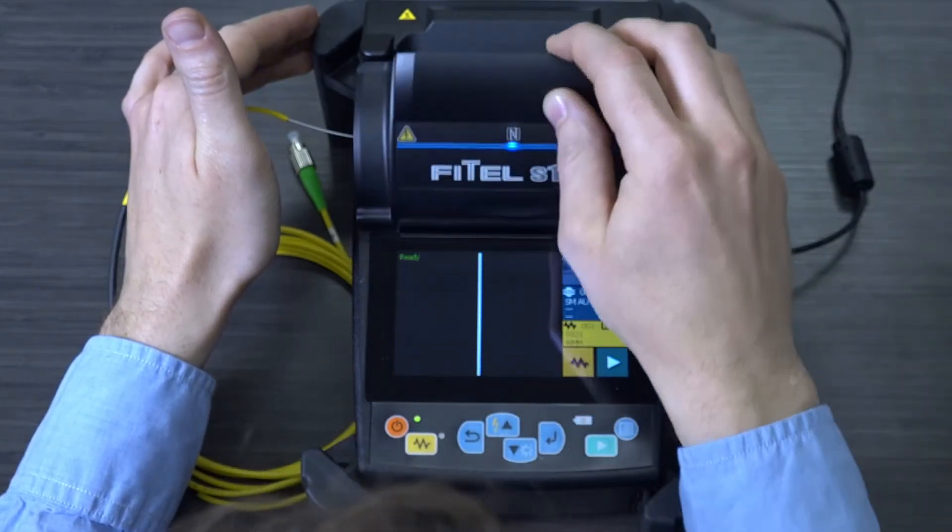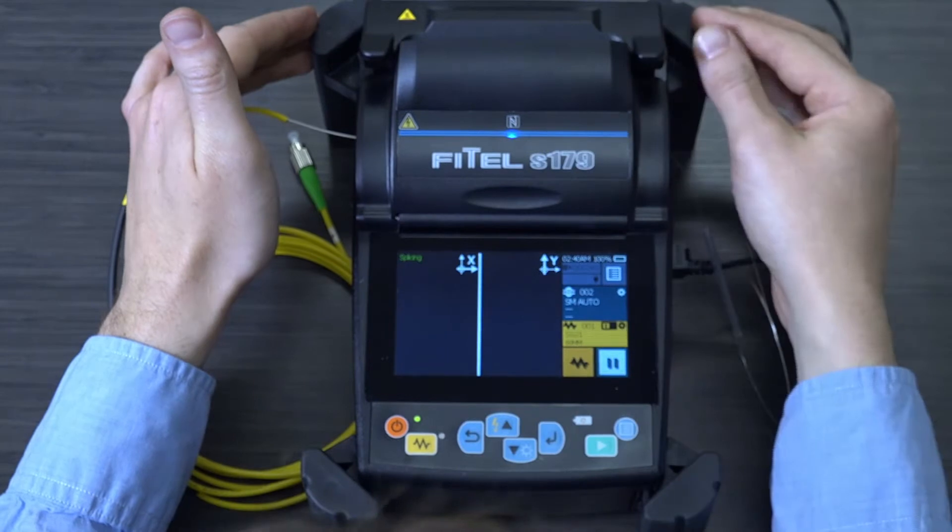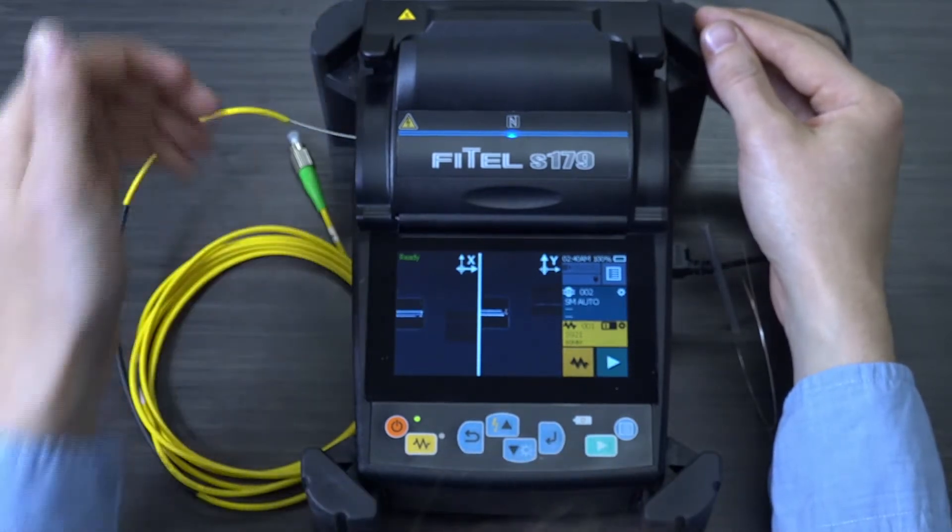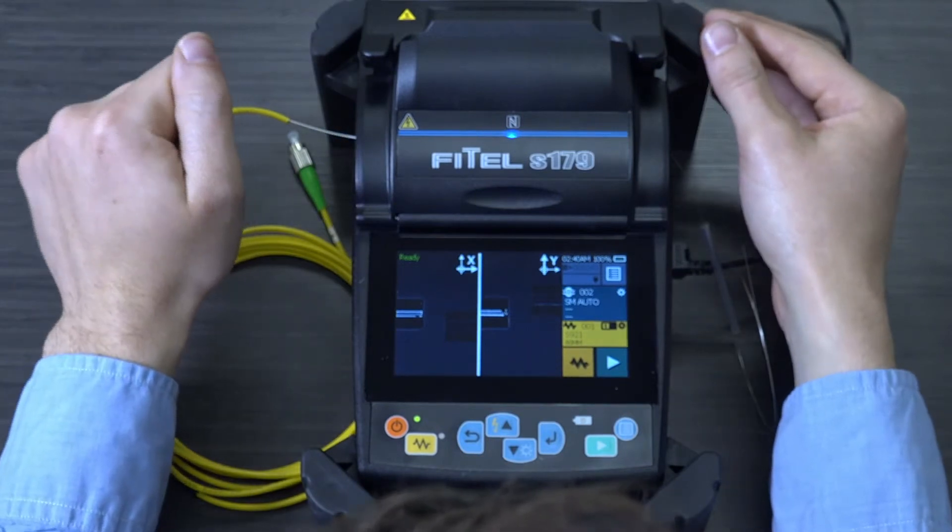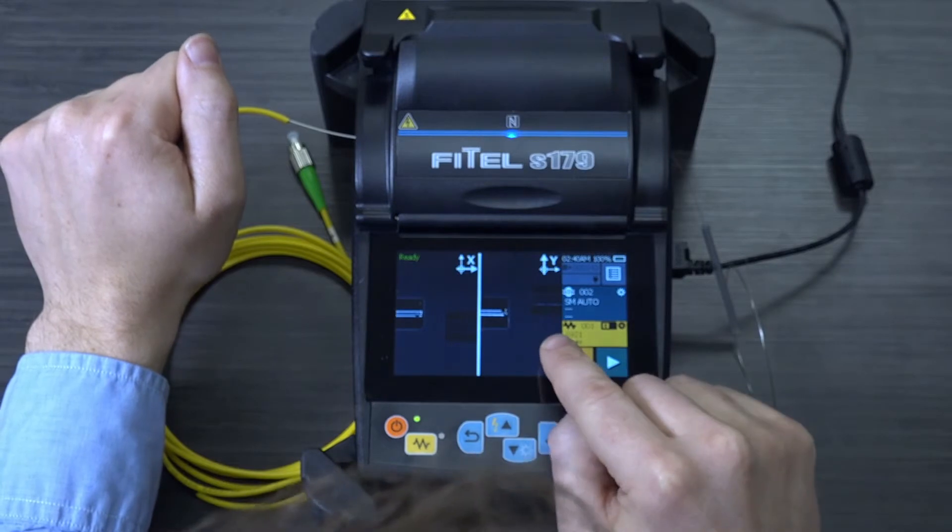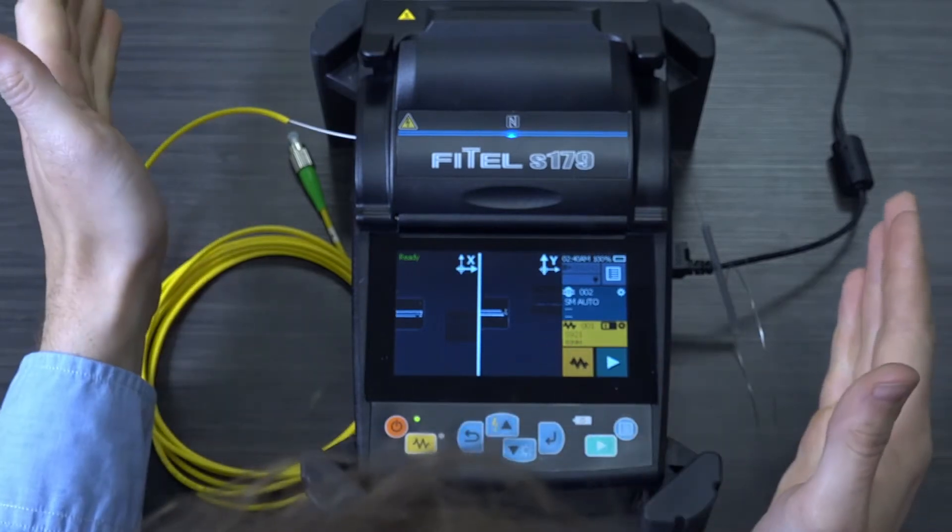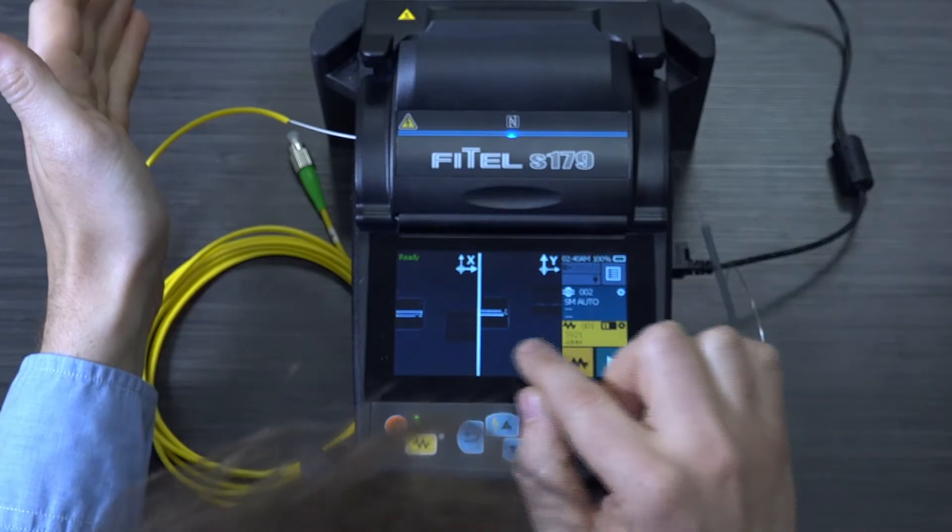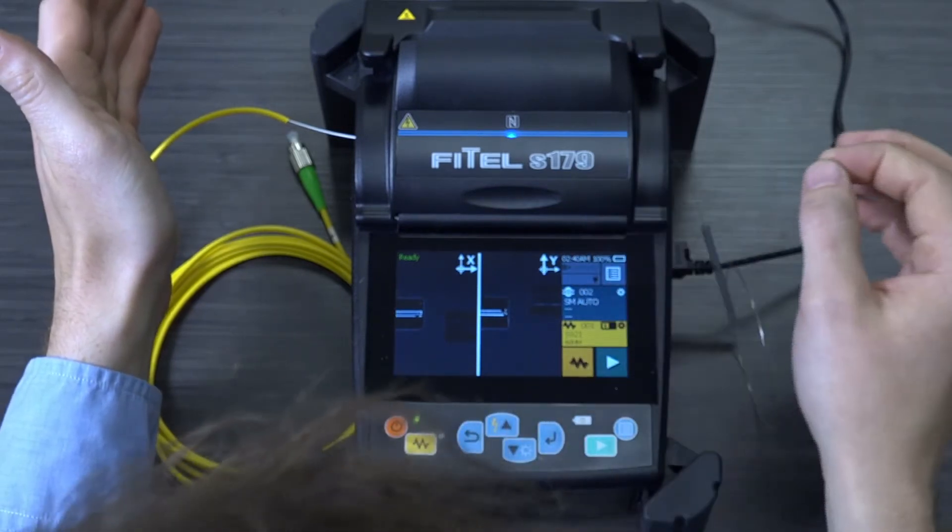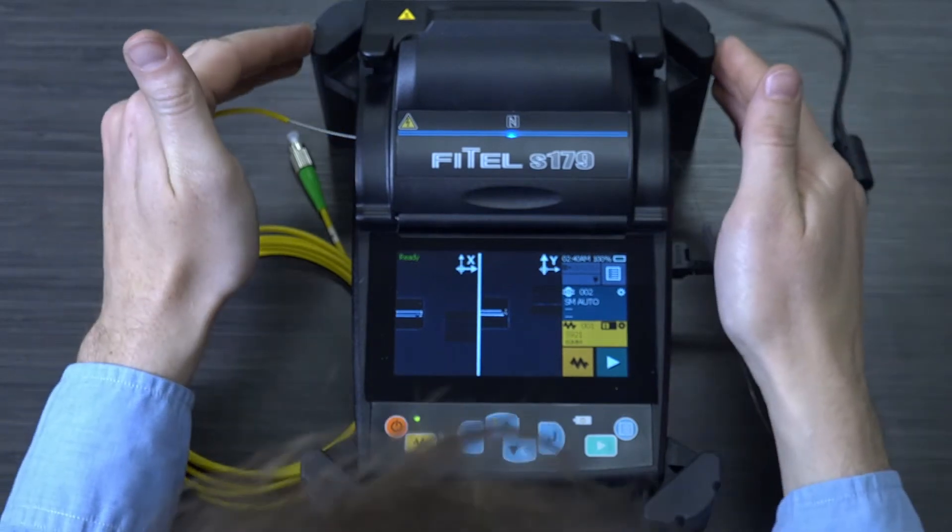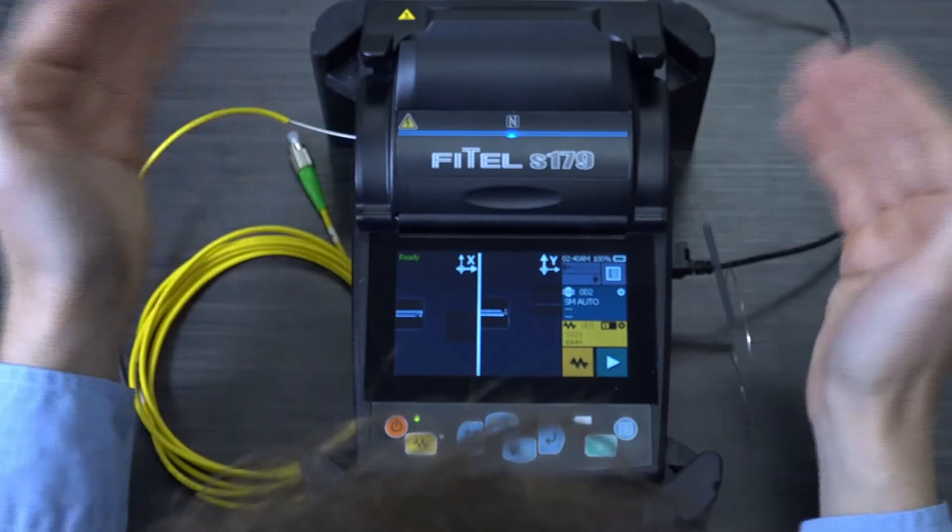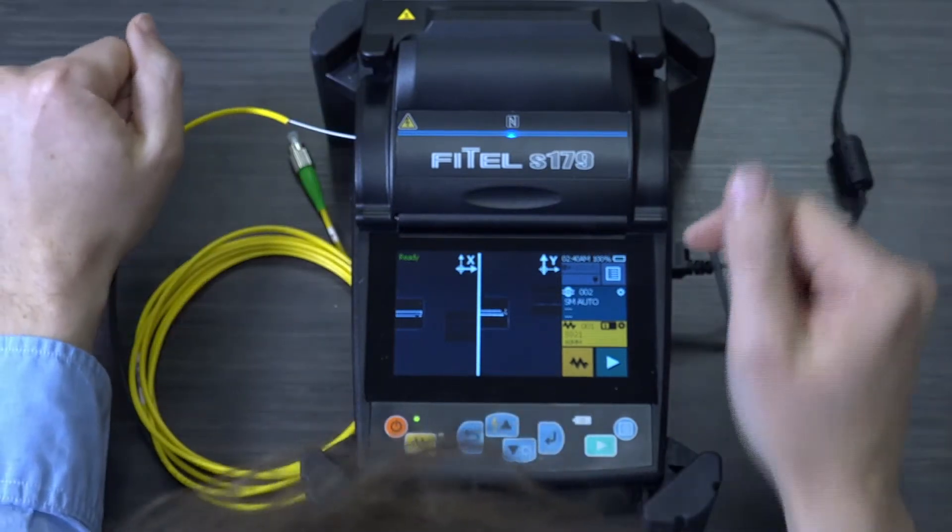So now we will carefully close the lid. The machine will bring the two fibers together, and then you can see them on the screen here. So at this point, I will do a quick check to make sure that both of the sides have a nice flat cleave. The splicer will catch it if you try to splice it, but if you do see that there's not a nice cut on either side, you need to remove the fiber and perform the previous step and give a nice 90 degree cleave on each side. Both of these look pretty good, so I'm going to hit the play button.